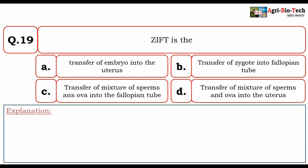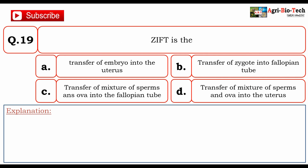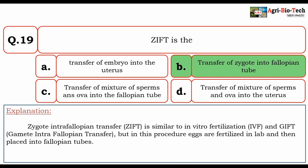ZIFT stands for: A. transfer of embryo into uterus, B. transfer of zygote into the fallopian tube, C. transfer of mixture of sperms and ova into the fallopian tube, D. transfer of mixture of sperms and ova into the fallopian tube. ZIFT is similar to in vitro fertilization and GIFT, but in this procedure, eggs are fertilized in the lab and then placed into fallopian tubes. The correct option is B — transfer of zygote into fallopian tube.